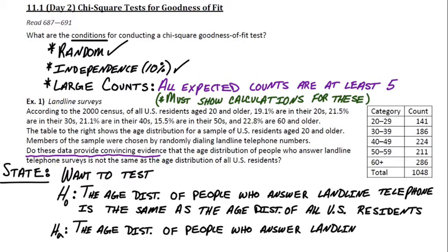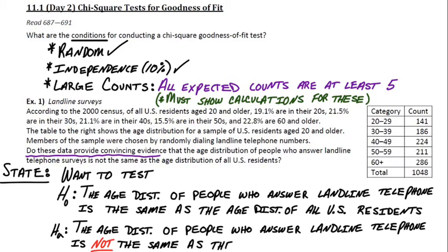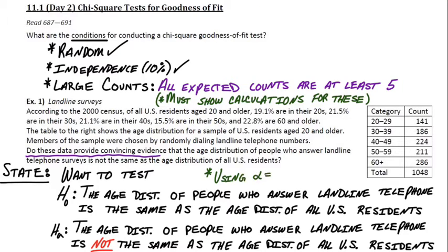We want to test two hypotheses: the null and the alternative. The null hypothesis says the age distribution of people who actually answer landline telephone surveys is the same as the age distribution from the U.S. census. The alternative hypothesis says those two distributions are not the same — that the distribution of people who answer landline surveys is different from the age distribution for all U.S. residents. We'll use an alpha level of 0.05.